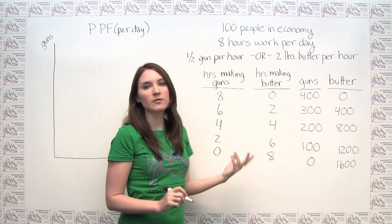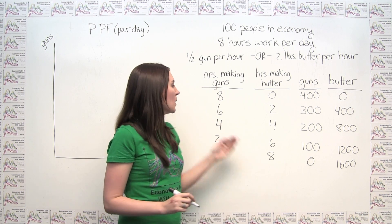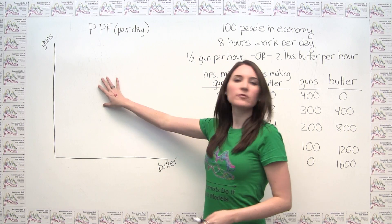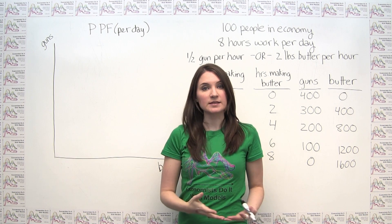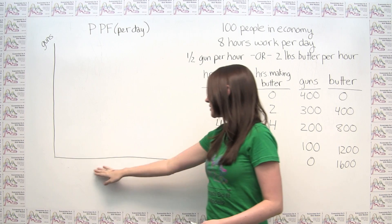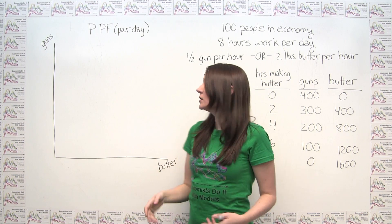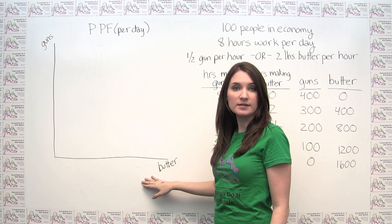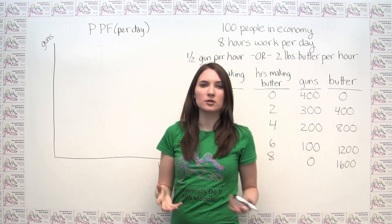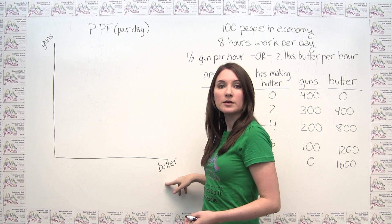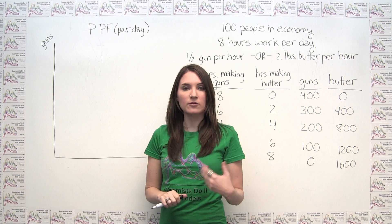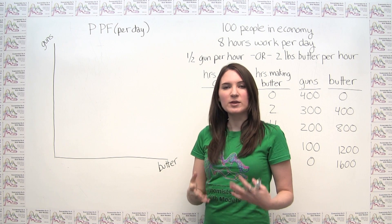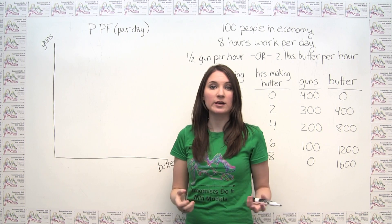So this is just a representative sample of all the different combinations of output that our economy could produce. We're going to use these points to construct our production possibilities frontier. Our axes are just the quantities of the two different goods. I've chosen to put guns on the y-axis and butter on the x-axis, though the placement is somewhat arbitrary. What is important to keep in mind is the interpretation when we discuss the slope of the production possibilities frontier, in which case it does matter which good is on which axis.